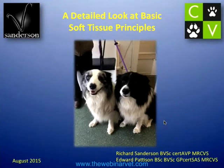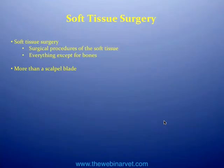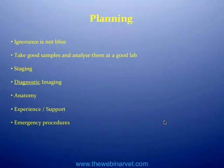Today's talk is looking at basic soft tissue surgical principles — and really we're going to look at the whole package, not just picking up the scalpel blade. Soft tissue relates to everything in the body except bone: muscle, skin, fat, tendons, ligaments, eyes, ears, and more. It makes up the vast majority of work seen in first opinion practice, and it's important to recognize that surgery is more than just picking up a scalpel — a lot of the hard work is done well before the animal gets to theatre.